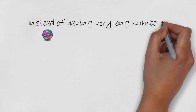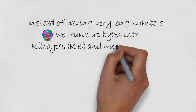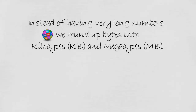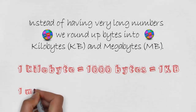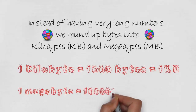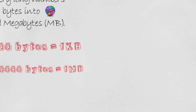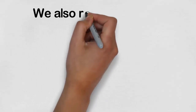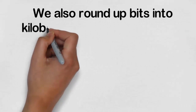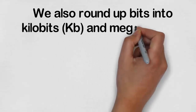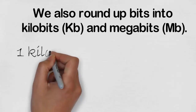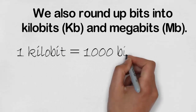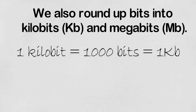Instead of having very long numbers, we round up bytes into kilobytes (KB) and megabytes (MB). One kilobyte equals one thousand bytes. One megabyte equals one million bytes. We also round up bits into kilobits (kb) and megabits (Mb). One kilobit equals one thousand bits, written as one kbps.